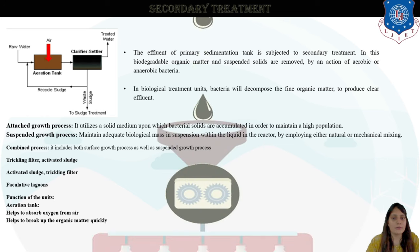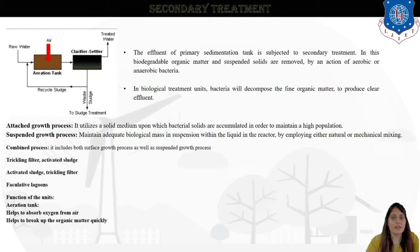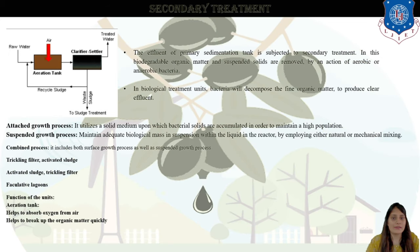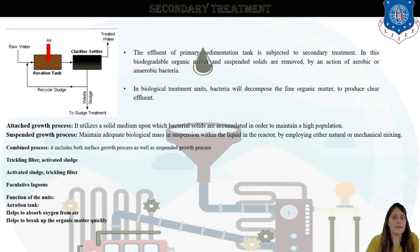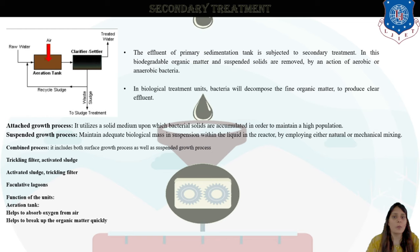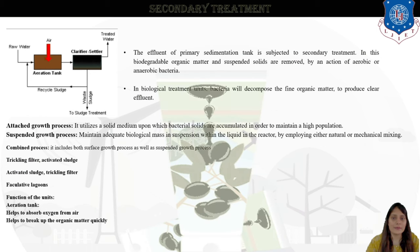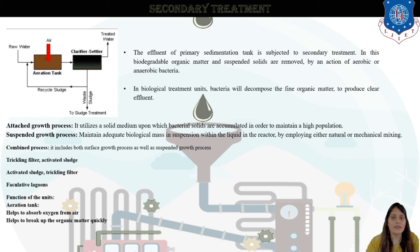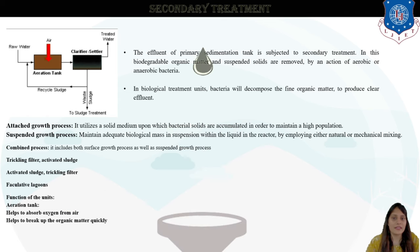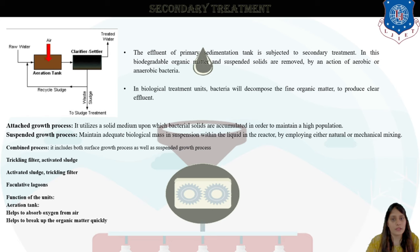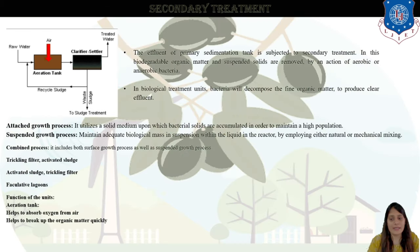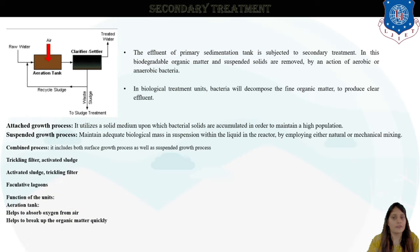In secondary treatment, the terms coming up are: attached growth process, suspended growth process, trickling filter, and activated sludge. The effluent of the primary sedimentation tank is subjected to secondary treatment, in which biodegradable organic matter and suspended solids are removed by the action of aerobic and anaerobic bacteria. Trickling filter and activated sludge are the filter beds used for treatment of water — like a filter layer provided to clear the water. Their functional role is to absorb oxygen from air and help break up organic matter quickly.